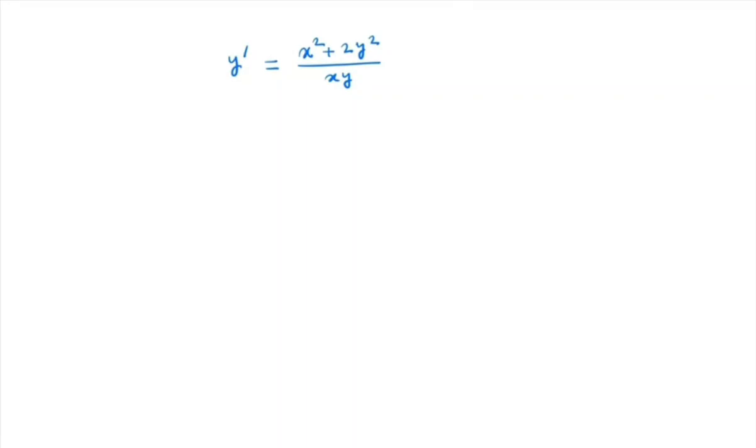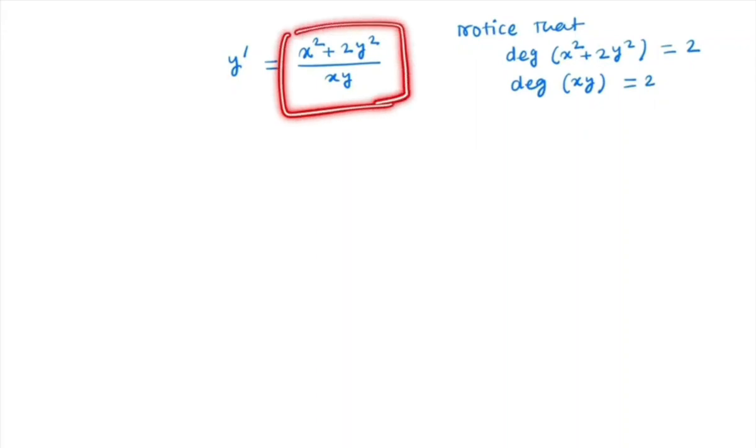Now first notice that degree of the numerator in the right hand side, x square plus 2y square, is 2 and degree of xy is also 2. So that means that the function x square plus 2y square by xy is a homogeneous function of degree zero.